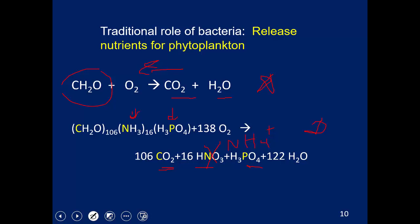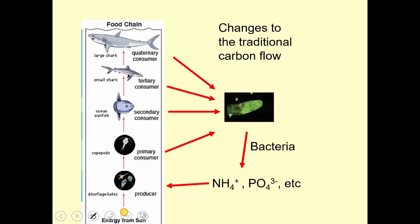The important point is that both inorganic nitrogen and phosphorus are released during degradation — which is important for refueling phytoplankton growth. Now let's think about changes to that traditional carbon flow. One key realization was that there's a lot of dissolved organic material, and that discovery prompted changes in how we view carbon flow through the system.